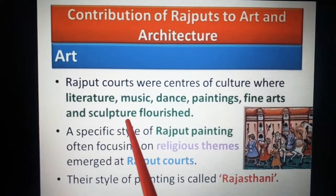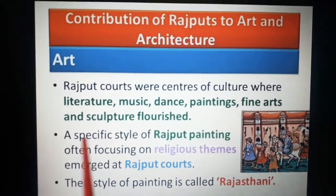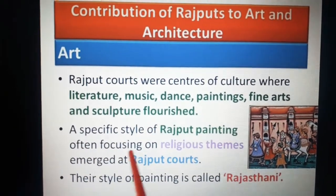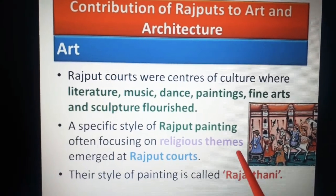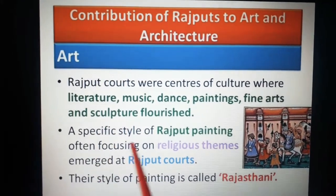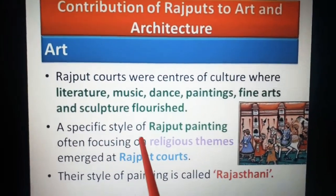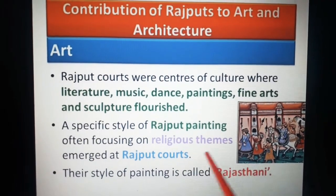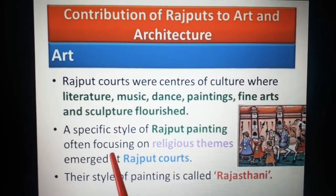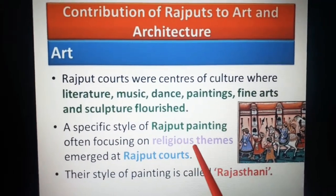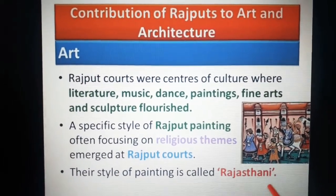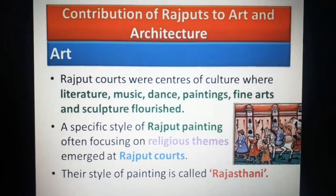Sculpture means statues. A specific style of Rajput painting, often focusing on religious themes, emerged at Rajput courts. They have a specific style and they are focused on religious themes — the paintings are theme-oriented, based on religion. This style of painting is called Rajasthani.